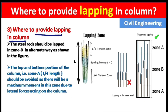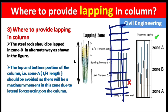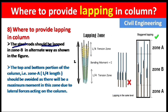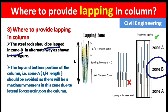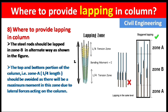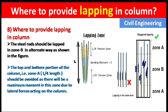Now the most important question: where to provide lapping in a column. The steel rods should be lapped in Zone B in an alternate way, as shown in the figure. Zone B is the middle zone of the column. In the alternate lapping arrangement, one lap is placed here and another is offset — never all laps aligned in the same horizontal plane, as that would be dangerous.